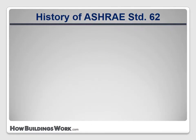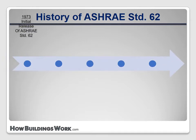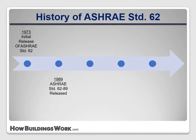ASHRAE Standard 62 was originally released in 1973. In 1989, a version was released that included a recommendation of air exchange rates of at least 0.35 air changes per hour, or 15 CFM per occupant. This recommendation was adopted by building codes and retrofit programs, and it's still in use today in some applications.